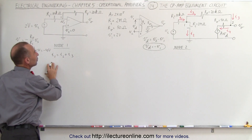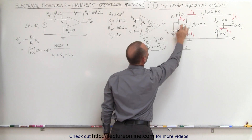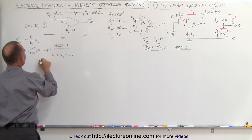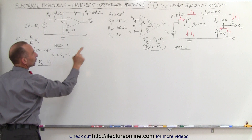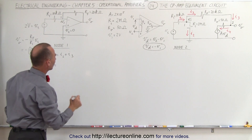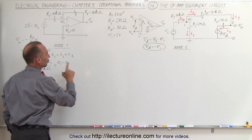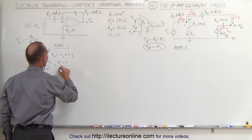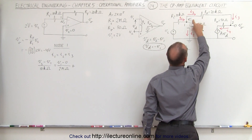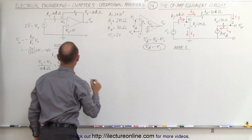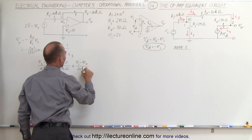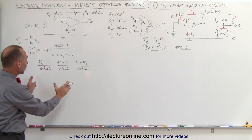I_1 equals (V_S minus V_1) divided by 10 kilohms. I_2 equals V_1 divided by 2 megaohms — current to ground through the internal resistance. I_3 equals (V_1 minus V_O) divided by 20 kilohms — the current through the feedback resistor branch.